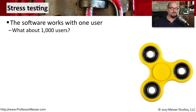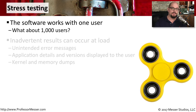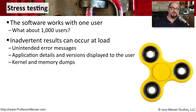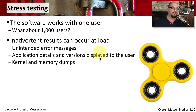Now that we've performed tests of the source code and of the running application to look for security problems, let's try increasing the load of this application to see what happens. We can do this using a stress testing tool — one that can either physically or virtually simulate one or thousands of users all using this application simultaneously. Once you start to hit the limits of what an application is capable of doing, you start to receive some unintended results. You may get error messages, application and version information that you didn't intend to show to the user, or simply crashes of the application providing kernel and memory dump information to the screen.